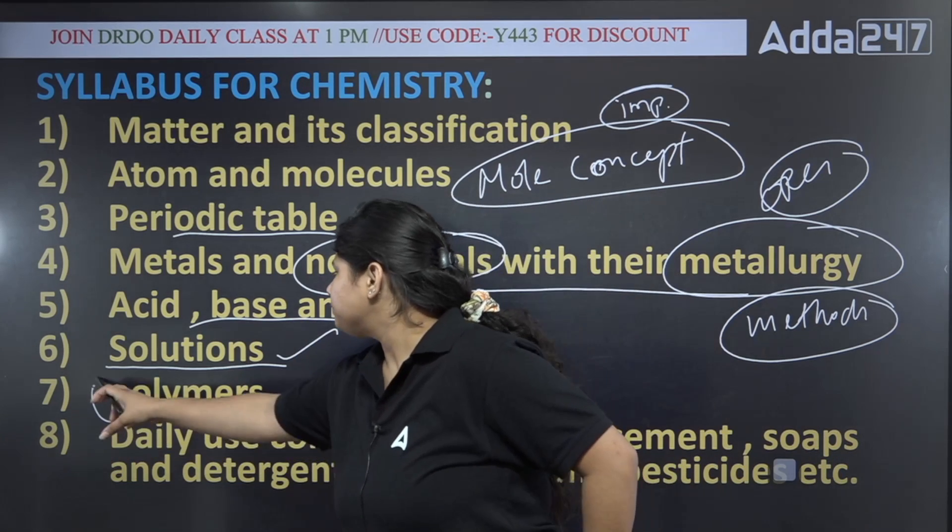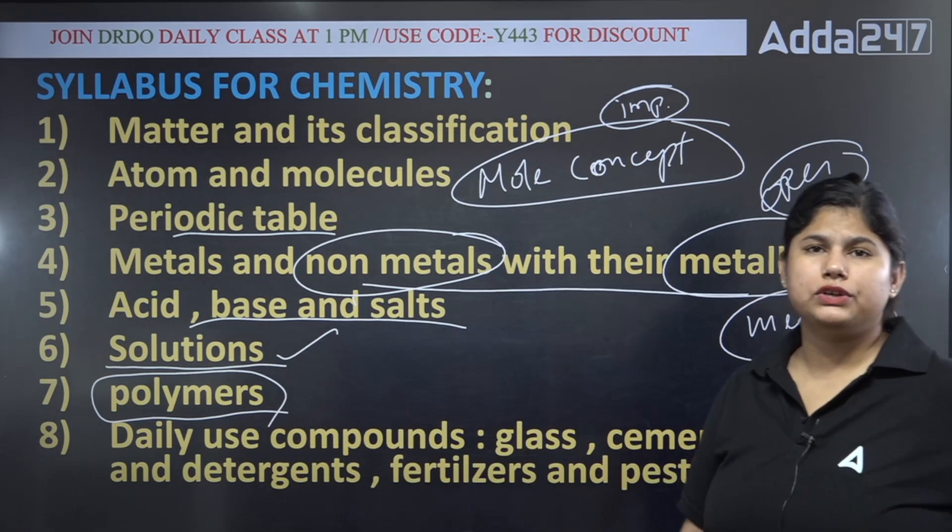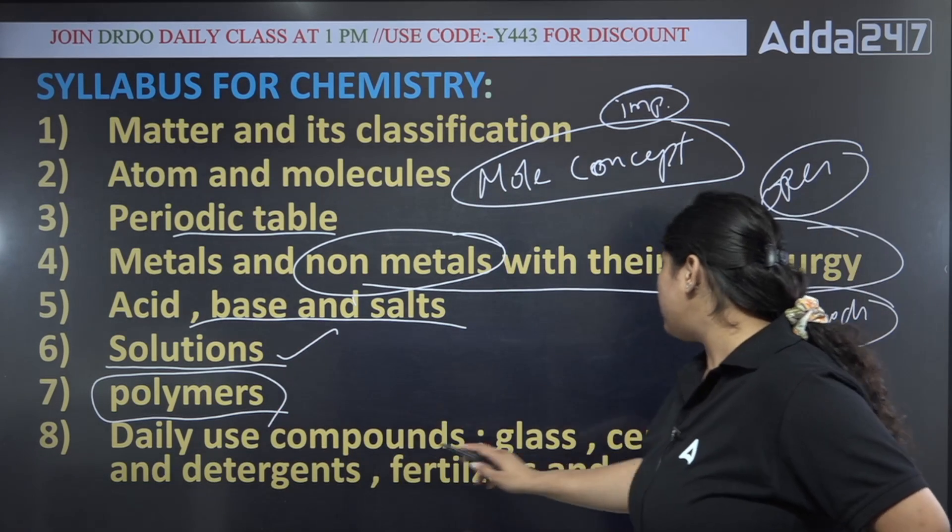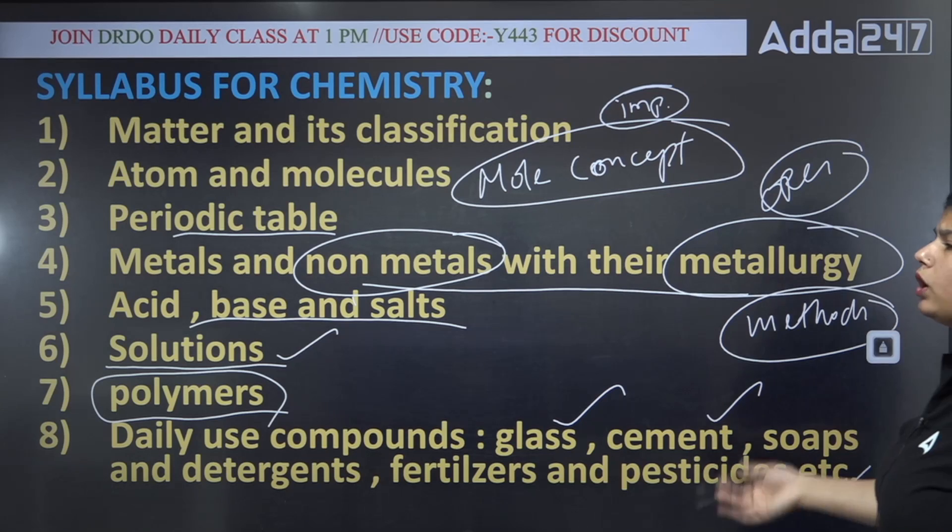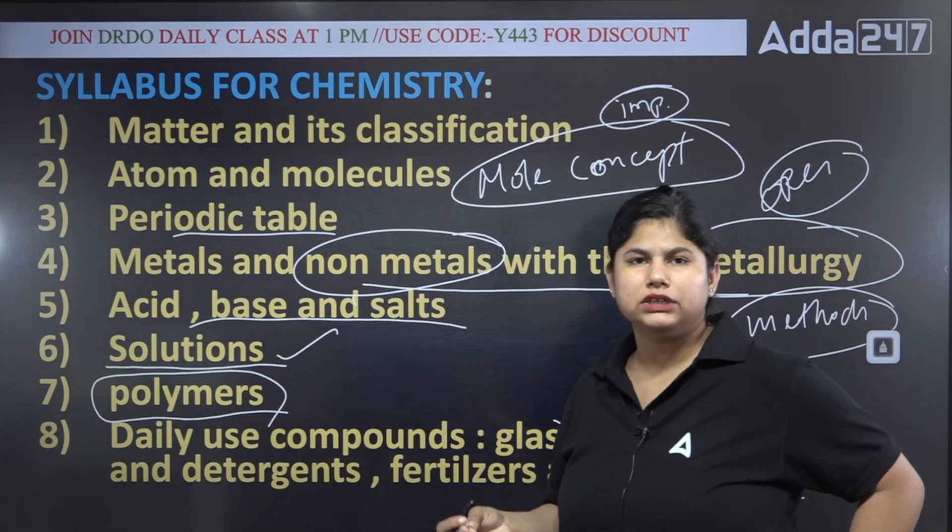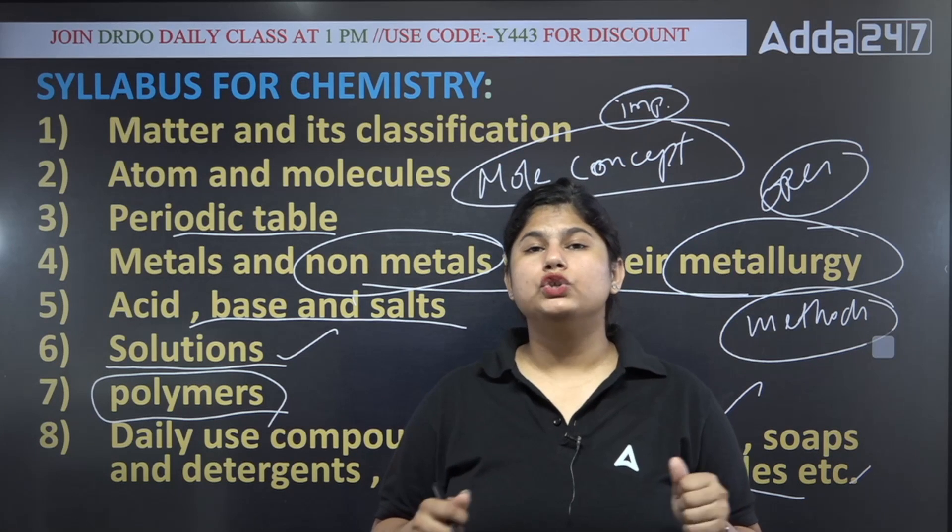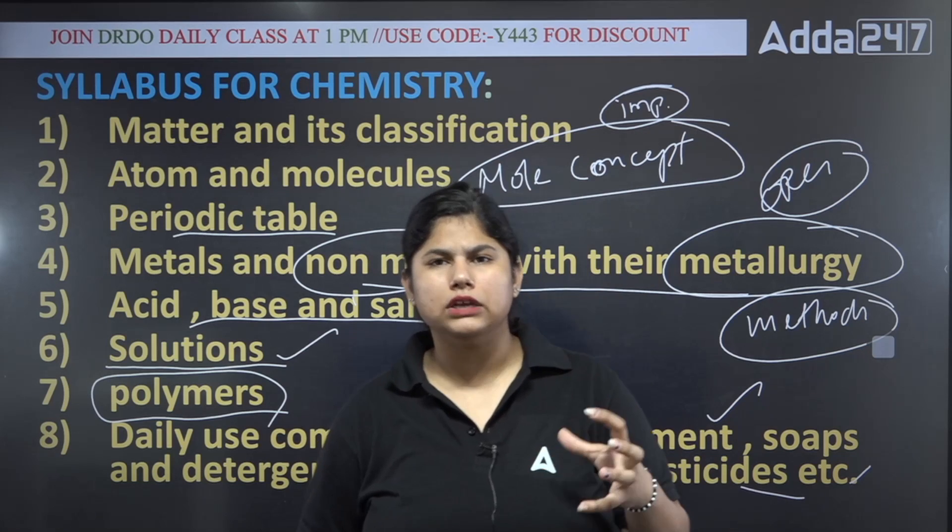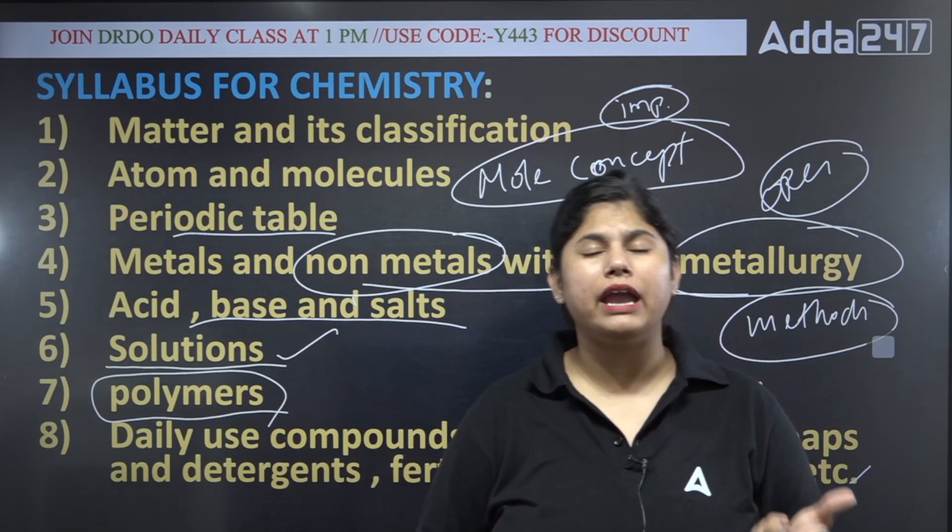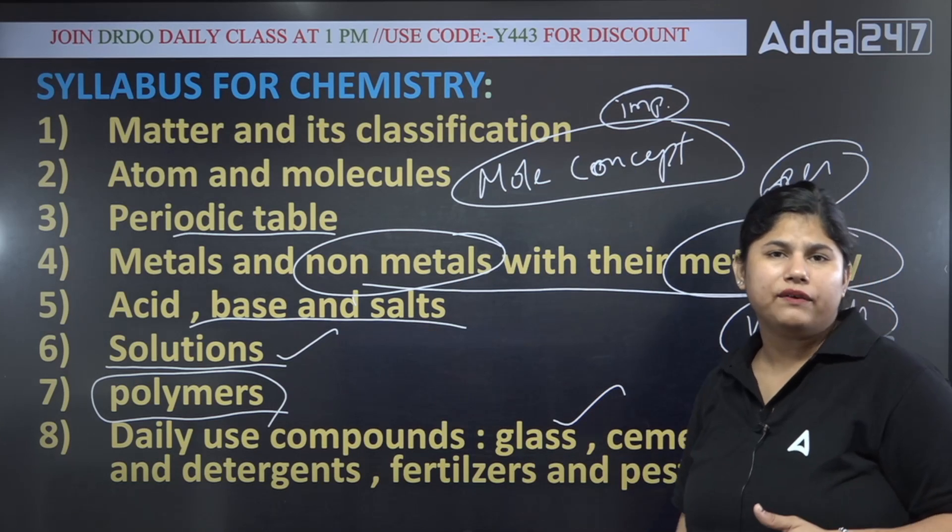Polymers—very important. Daily use compounds: glass, cement, soap, detergent, fertilizer, pesticide, etc. What is your name, formula? Washing soda, baking soda, sodium bicarbonate formula—these things you will get to see.